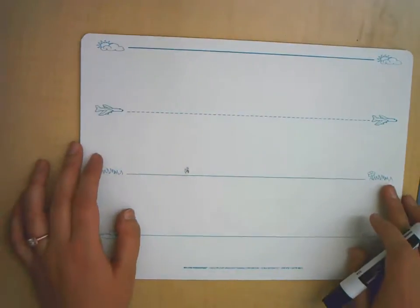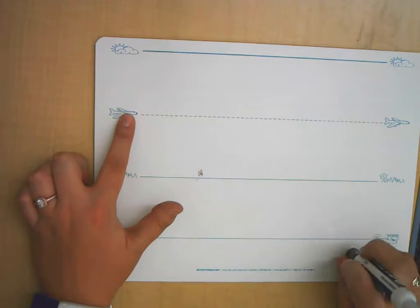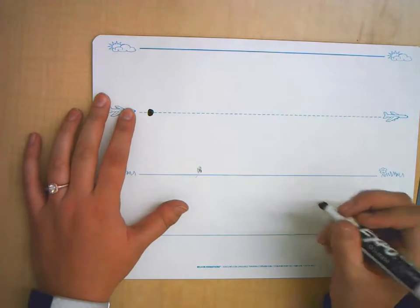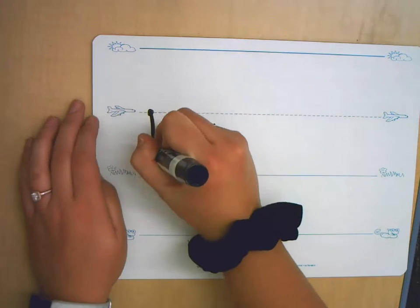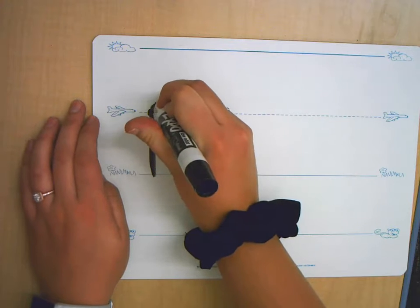All right, so now when you're writing the letter M it's going to start on that plain line again just like the letter N did. So I'm going to put a dot here so I don't forget that. You're going to draw a line down to the grass line, trace back up to the plain line and make a hump.